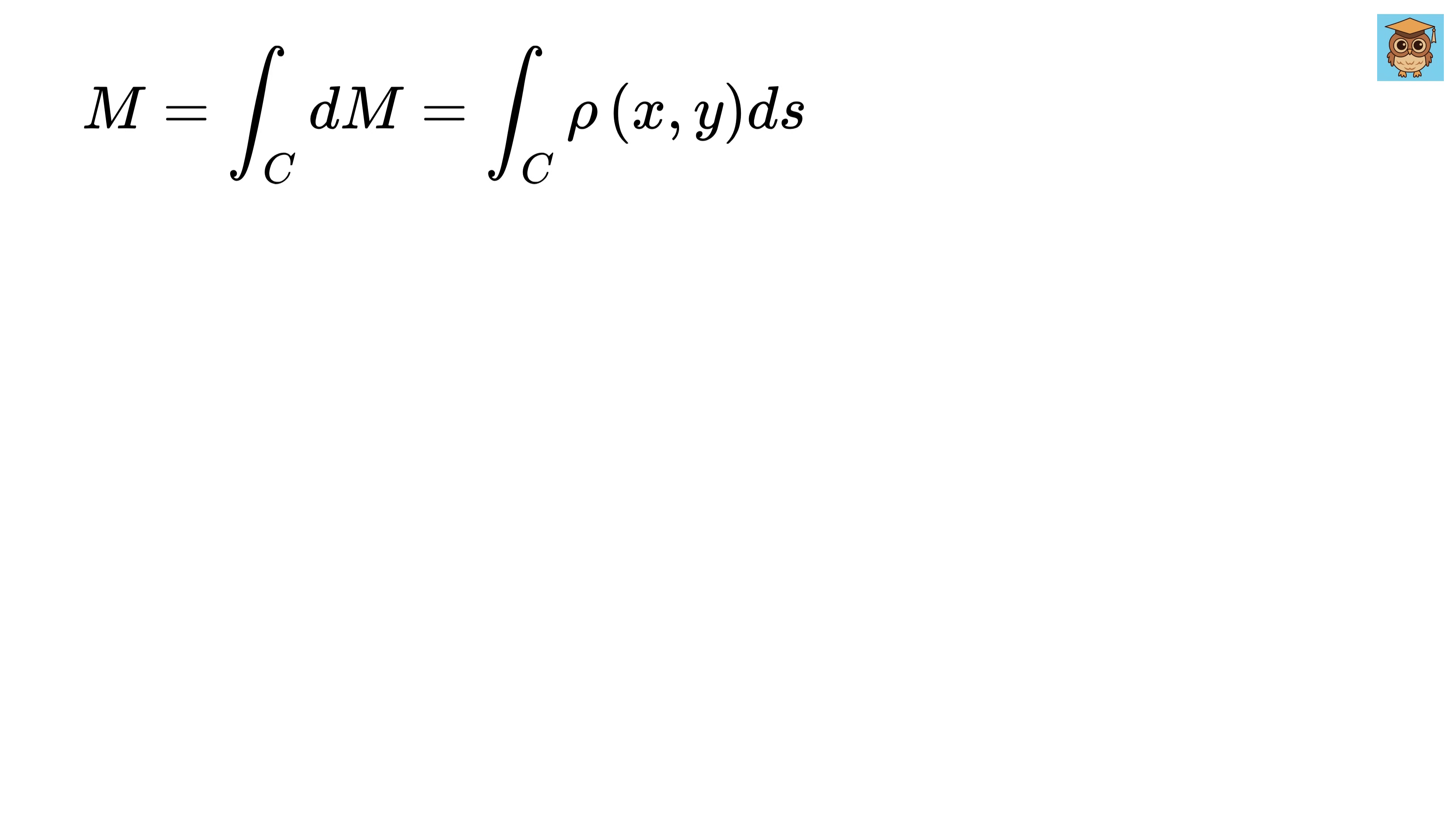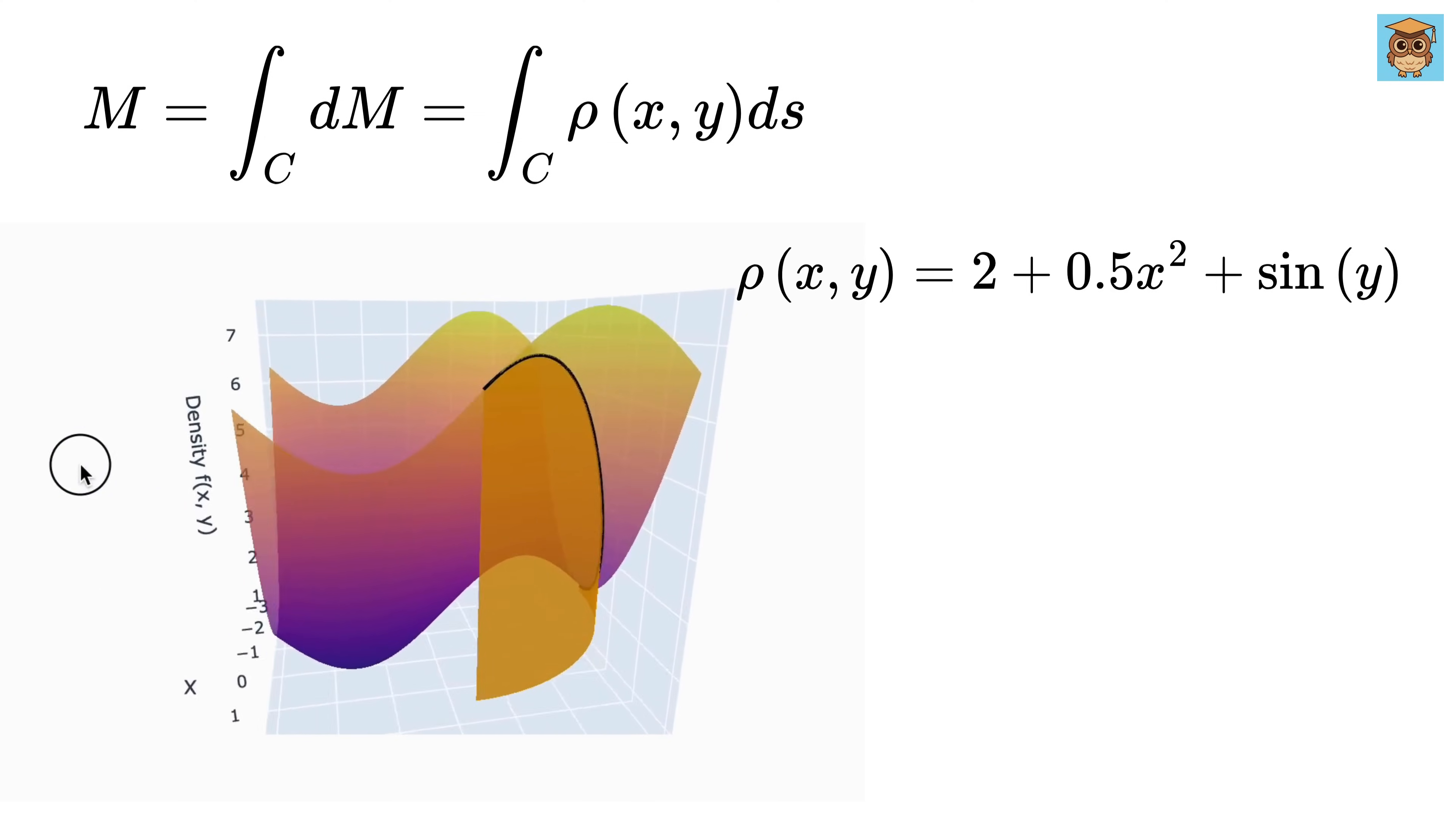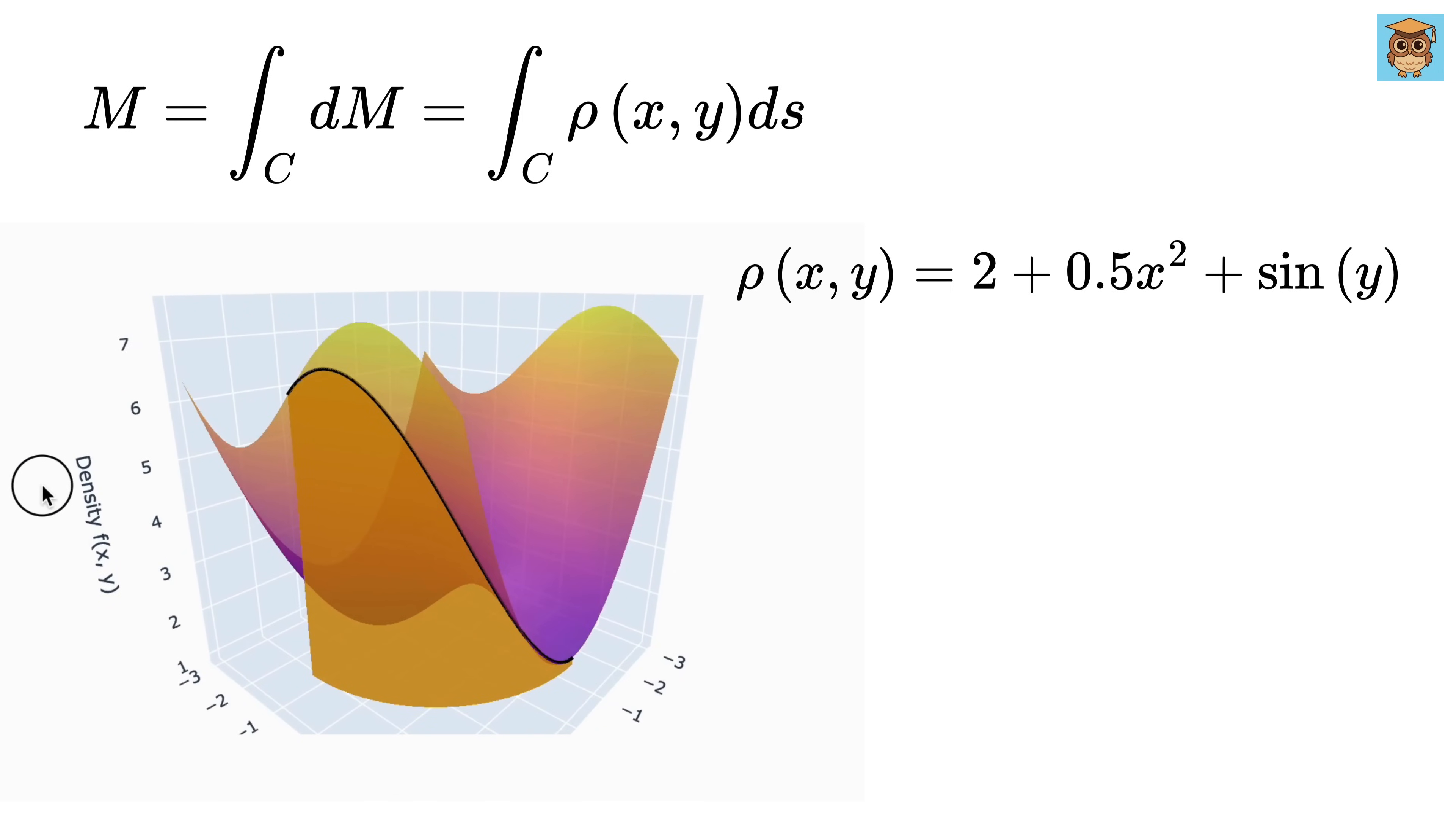Now finally, let us visualize the same for nonlinear density. Suppose our density is this scary looking. Its surface plot will be like this. Now, if we place the wire along the same path or the quarter circle on this surface, it will look something like this. You might say, this does not look like quarter circle, but this is because the surface itself is curved and varies in height, which distorts our perception of the wire's shape. And again, this orange ribbon will show the mass distribution something like this.